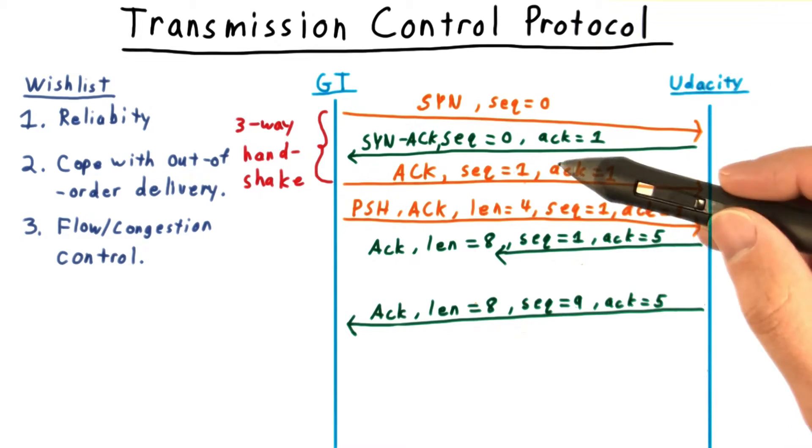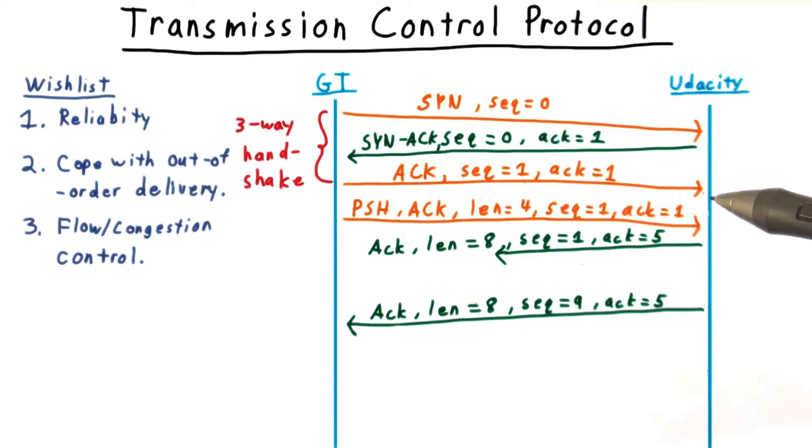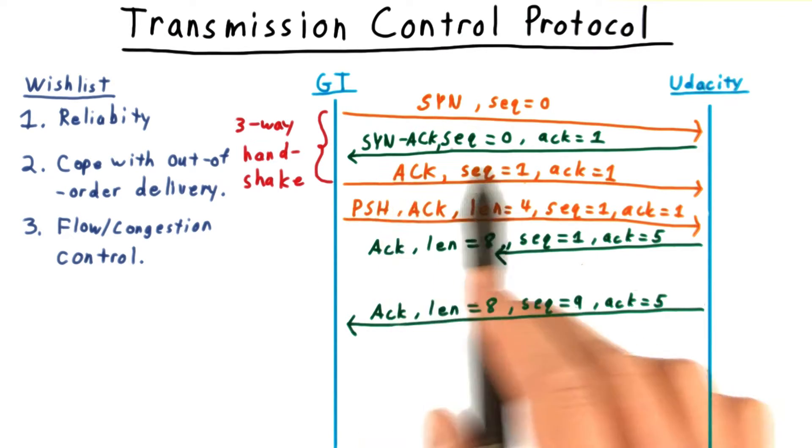During the handshake, both of these numbers get incremented by 1. In this scenario, TCP will be able to detect the dropped packet because the next message thinks that 9 bytes is the amount that should have been received. But in reality, GT has only received the initial acknowledgement.